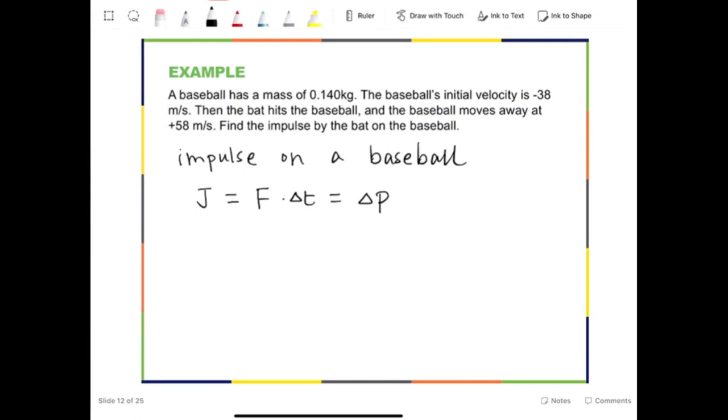We can write the associated equation, which is again J equals force times time and equals change in momentum. Now, based on this problem, we are looking for impulse, so this is the desired quantity. Do we know force? No, it's not given. Do we know time? No. Do we know change in linear momentum? Not directly. However, again, we know that this is equal to mass times final velocity minus initial velocity.